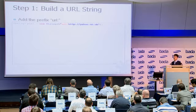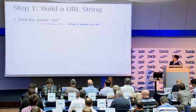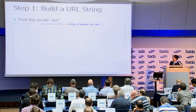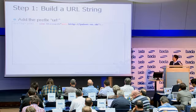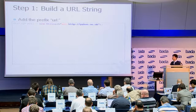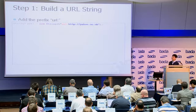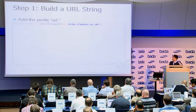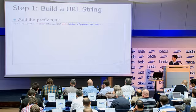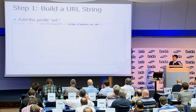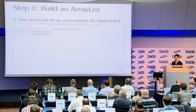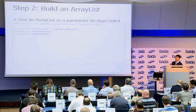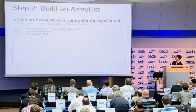The first step is making the URL string. I will connect to the Yahoo UK page, so I specify http://yahoo.co.uk. To provide the URL, you must add a prefix — the 'url:' colon prefix. Don't forget to add this. So step one is adding 'url:' and the URL. The next step is making it as an array list, because the app control uses the parameter as an array list.